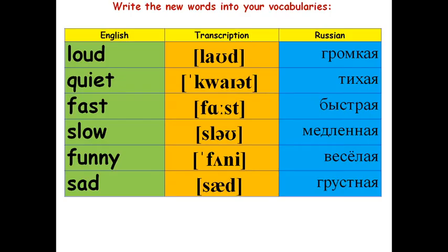Writing your words into your vocabularies again. Вновь записываем эти слова как новые к себе в словарик. То есть, в предыдущим шести словам добавляем еще шесть слов. Loud – громкая. Quiet – тихая. Fast – быстрая. Slow – медленная. Funny – веселая. Sad – грустная. Напоминаю, нам понадобятся эти слова, когда мы будем описывать разные виды музыки. Видео можете поставить на паузу, пока записываете слова.